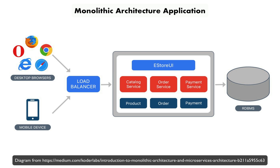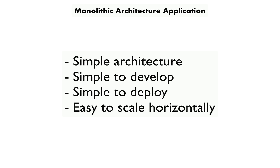Let's have a look at what microservices are and how they can benefit us. The application which you see on your screen is built using monolithic architecture, which means that it is a single-tiered application where everything is contained in a single repo hosted on a single platform. The benefits of this approach are that it is a simple architecture, simple to develop, simple to deploy, and can easily scale horizontally by running multiple copies behind a load balancer.